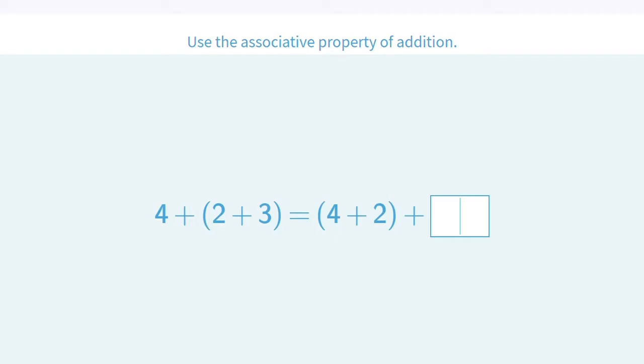Okay, we're using the associative property again. So again, that just means we have the same numbers on both sides of the equal sign, but we have them grouped differently. So do I have a four on both sides? Yes. Do I have a two on both sides? Yes. So that means what number goes in this box? A three. So we can say four plus two plus three equals four plus two plus three.